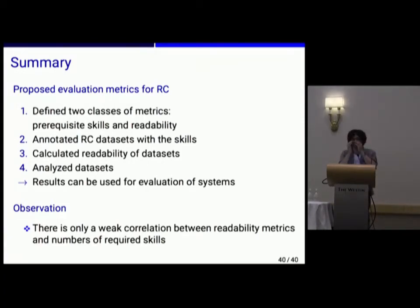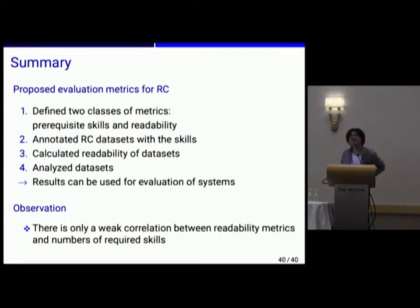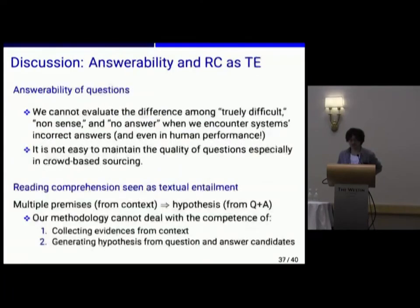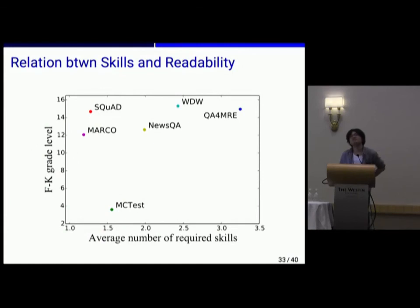You've come up with ways of evaluating different datasets and on the basis of your evaluation you've got very different results in terms of relative difficulty. How do they correlate with the results that systems are actually getting over these datasets? So you have results for SQuAD or for CNN Daily Mail, which wasn't in your table. Is there a strong correlation between your predicted complexity of the task and the results that systems are getting over the different datasets?